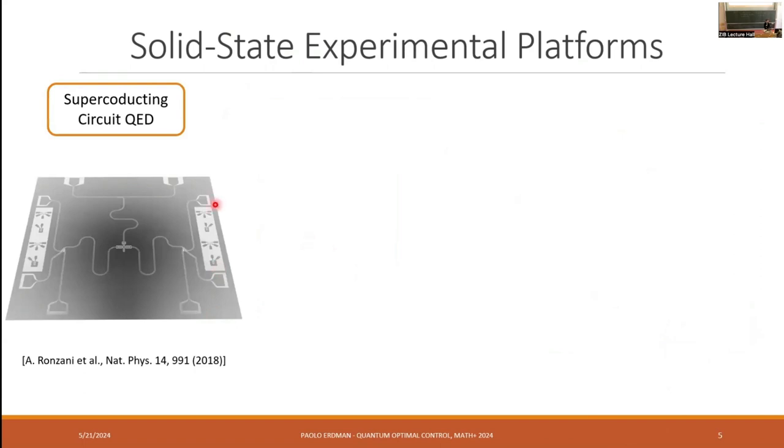One platform where we can study these systems are superconducting circuit QEDs. This is a device that was studied at the Aalto University in Helsinki. Here in the center, you see a superconducting qubit that is coupled to these two resistors at the end. And these resistors can have a different temperature, and they behave as a thermal bath of microwave photons for the qubit. In this experiment, they could actually measure the heat that was flowing from the hot reservoir to this cold one, mediated by this qubit. And through this additional line, one can think of adding a drive into the system and try to implement some kind of cycle or control.